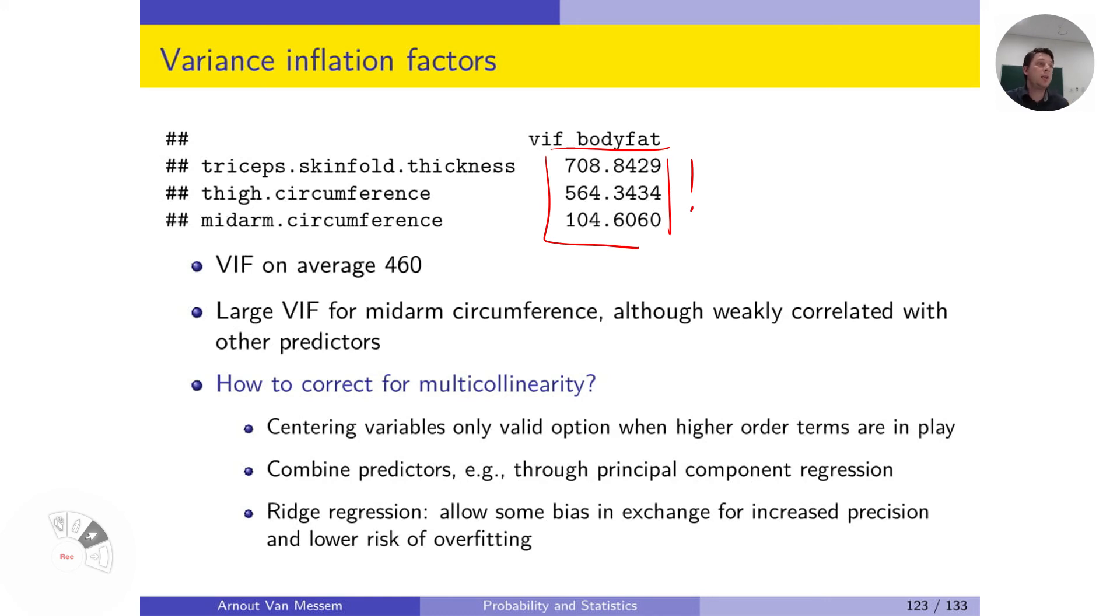So here we see that all three of them are high, there is multicollinearity with all three of them. The average VIF is even 460. So it means that my variance is inflated 460 times with respect to the variance that we would get if there was no correlation between the predictors.